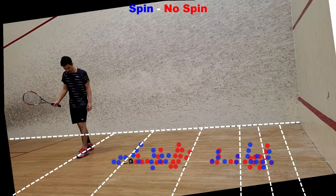Again the red dots are no spin, blue dots are lots of spin. You can pretty clearly see that on the second bounce, the shots with spin are landing further back in the court. I think this is because in order to put lots of spin on the ball, I often ended up hitting it a little bit harder.